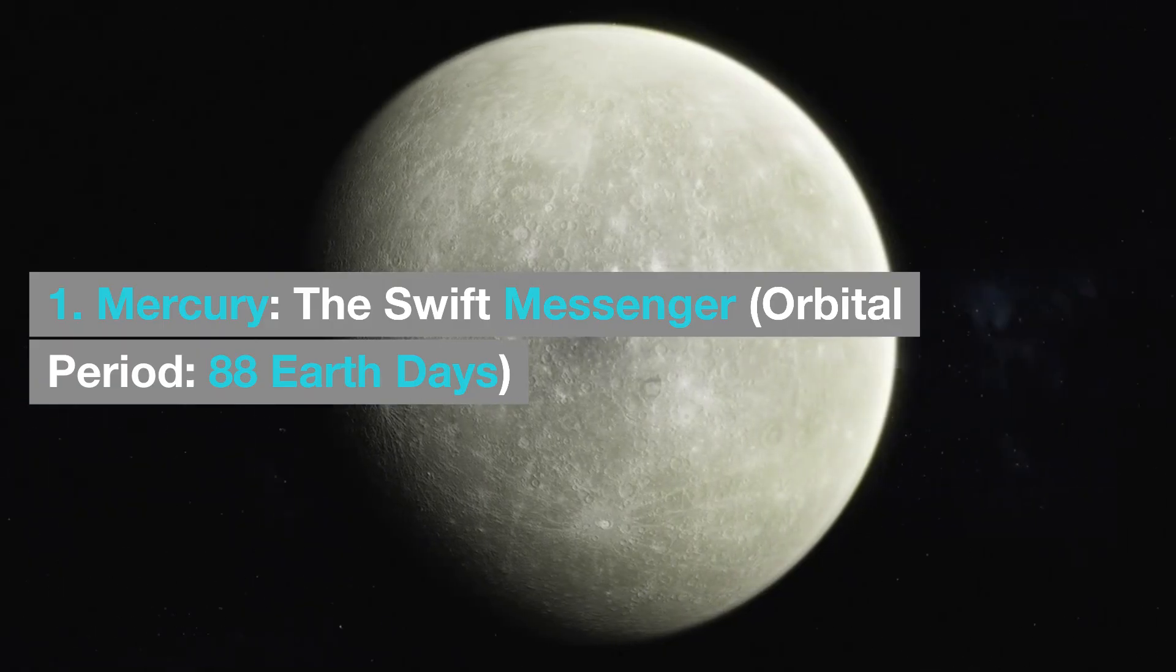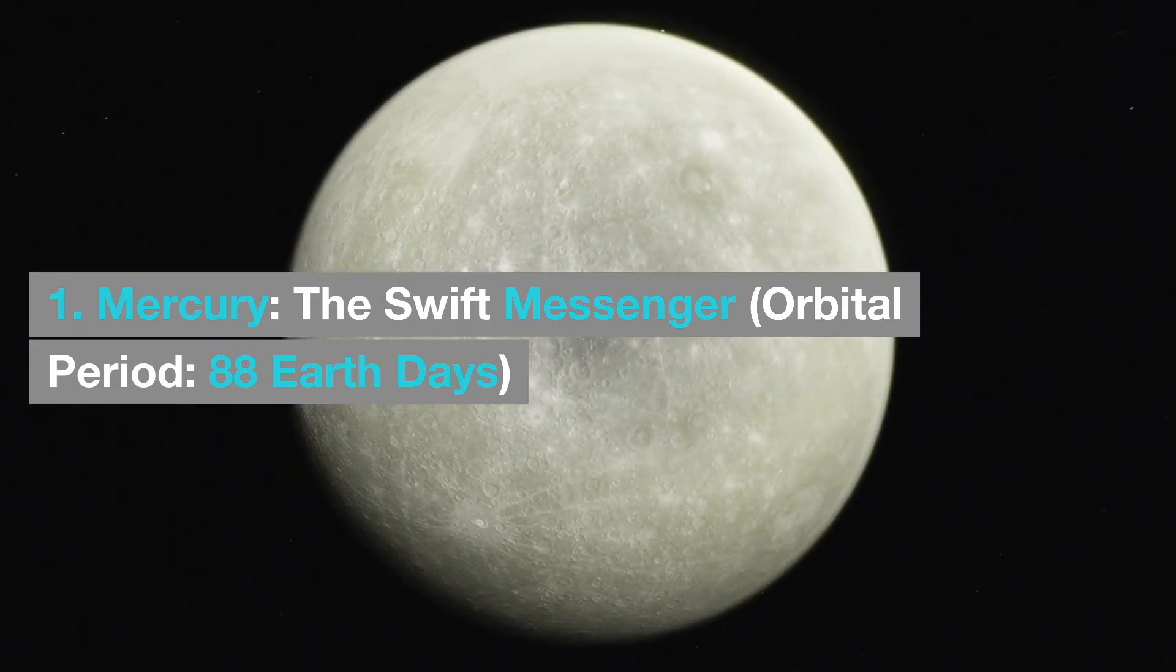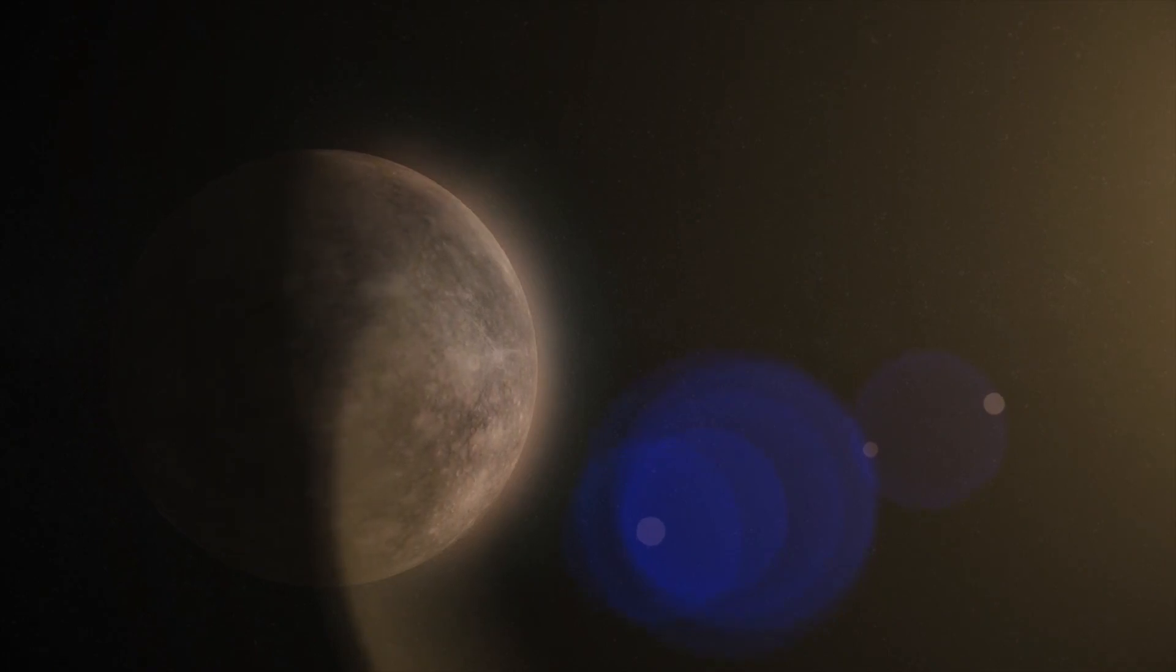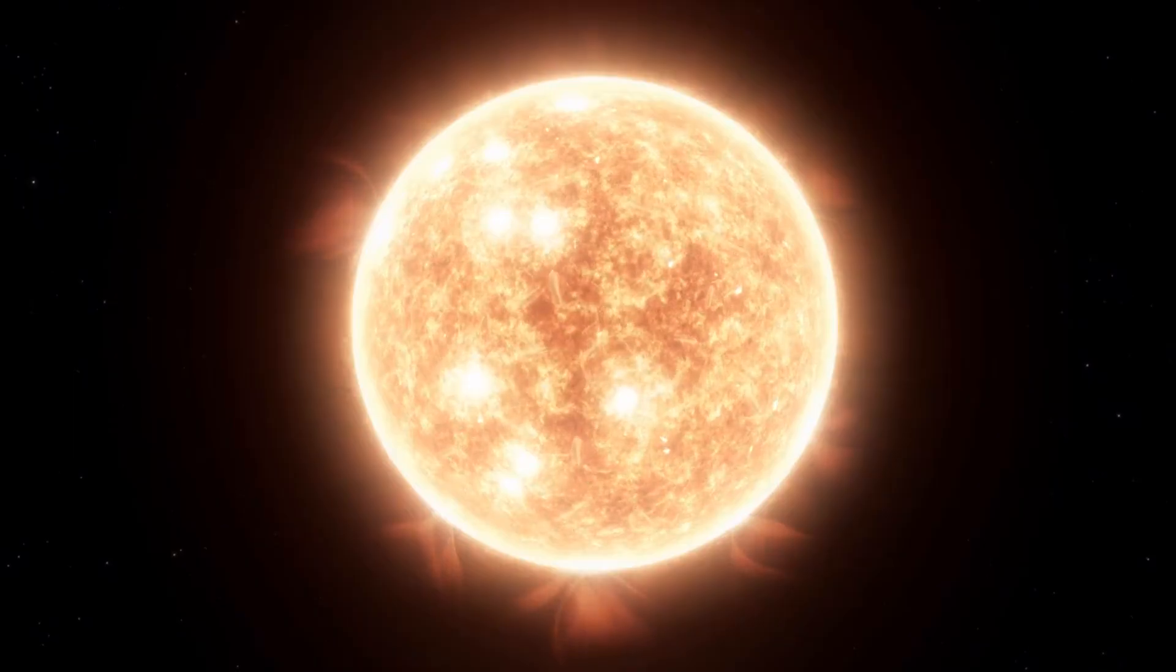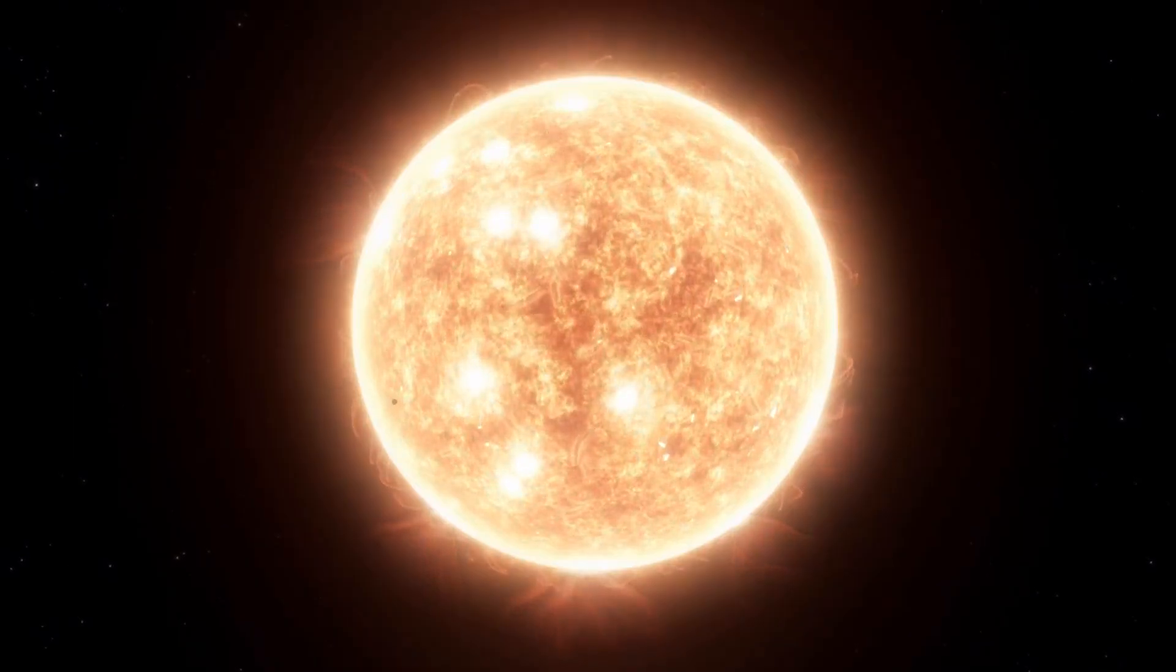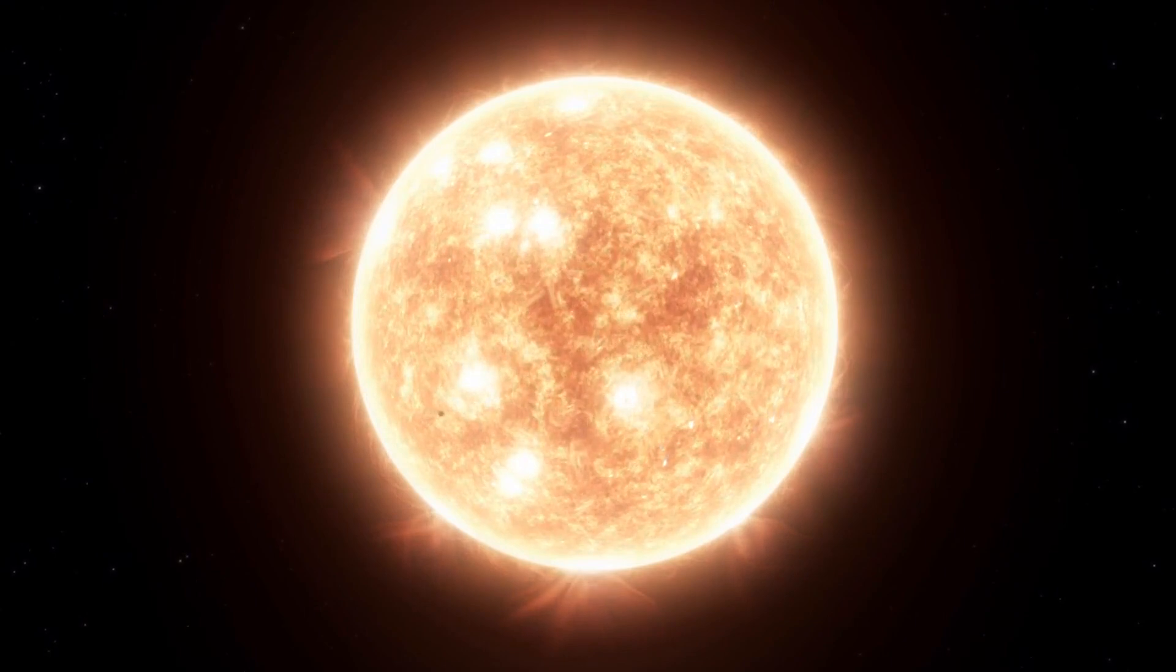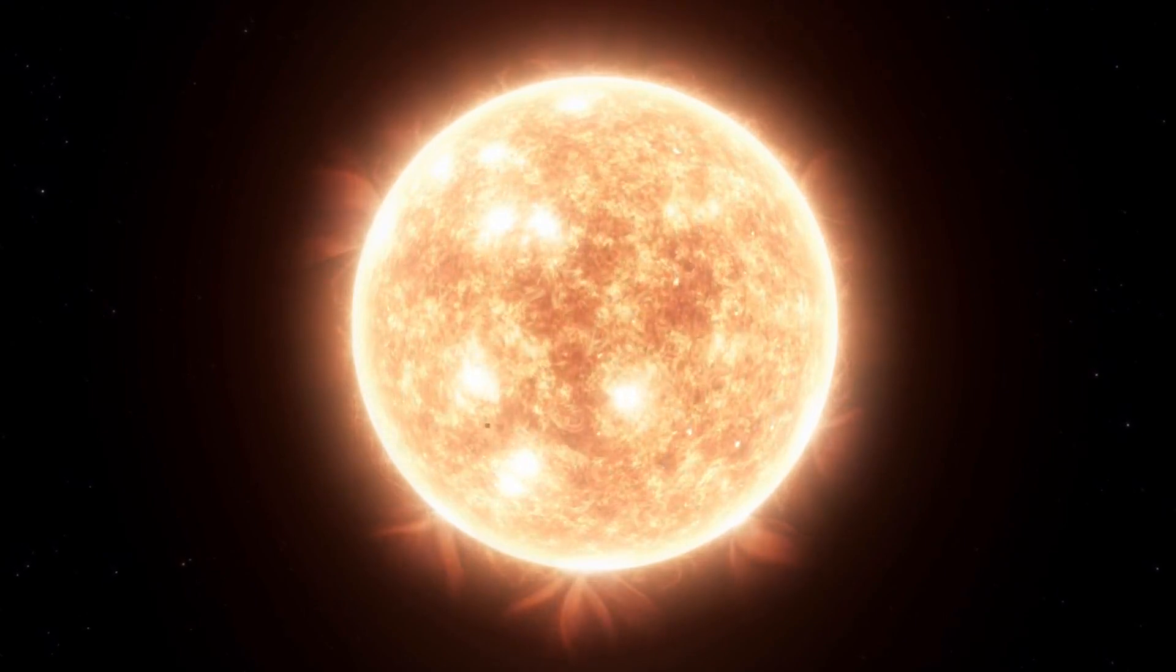Mercury, the swift messenger, orbital period 88 Earth days. The planet with the shortest orbital period in our solar system is Mercury, which is the closest to the sun. With an average orbital distance of approximately 36 million miles, Mercury travels around the sun in just 88 Earth days.